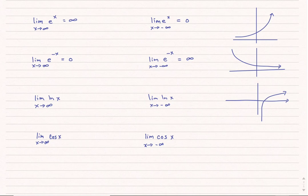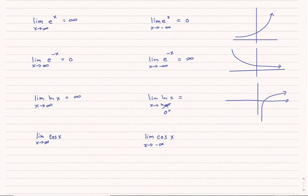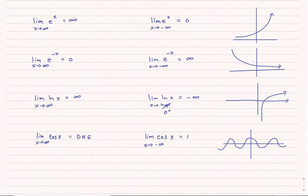Natural log of x is the inverse function of e to the x. It does approach infinity as x goes to infinity, just slower than other functions. However, natural log of x never gets past 0 approaching from the right-hand side, so the limit of natural log of x as x approaches 0 from the right equals negative infinity. Finally, for cosine, sine, tangent, and the reciprocal trig functions — none of those ever settle to a particular value. Therefore, the limit as x approaches positive or negative infinity for trig functions does not exist.